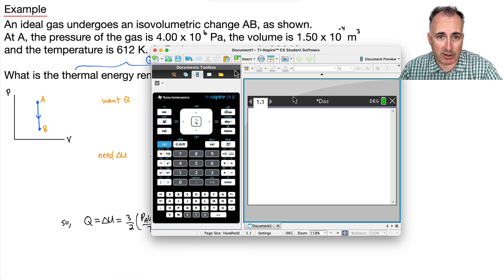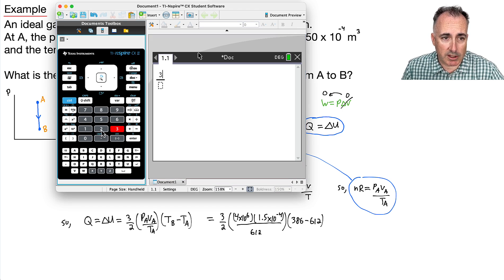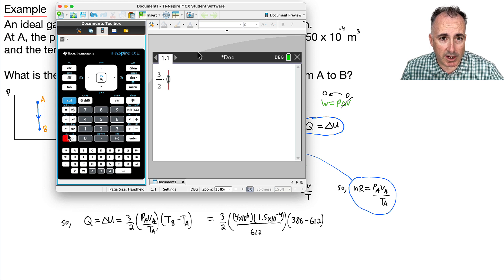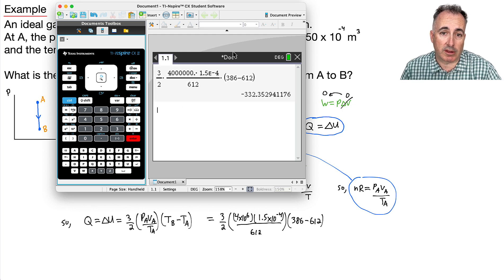We need a calculator for this. So I'll just open up my calculator, and let's do this whole thing here. I'm going to do 3 over 2, all that times 4 times 10^6, all that times 1.5 times 10^-4. On the bottom, 612, and all this times, in brackets, 386 minus 612. And I expect to get a negative, which I do. I get negative 332.3529.